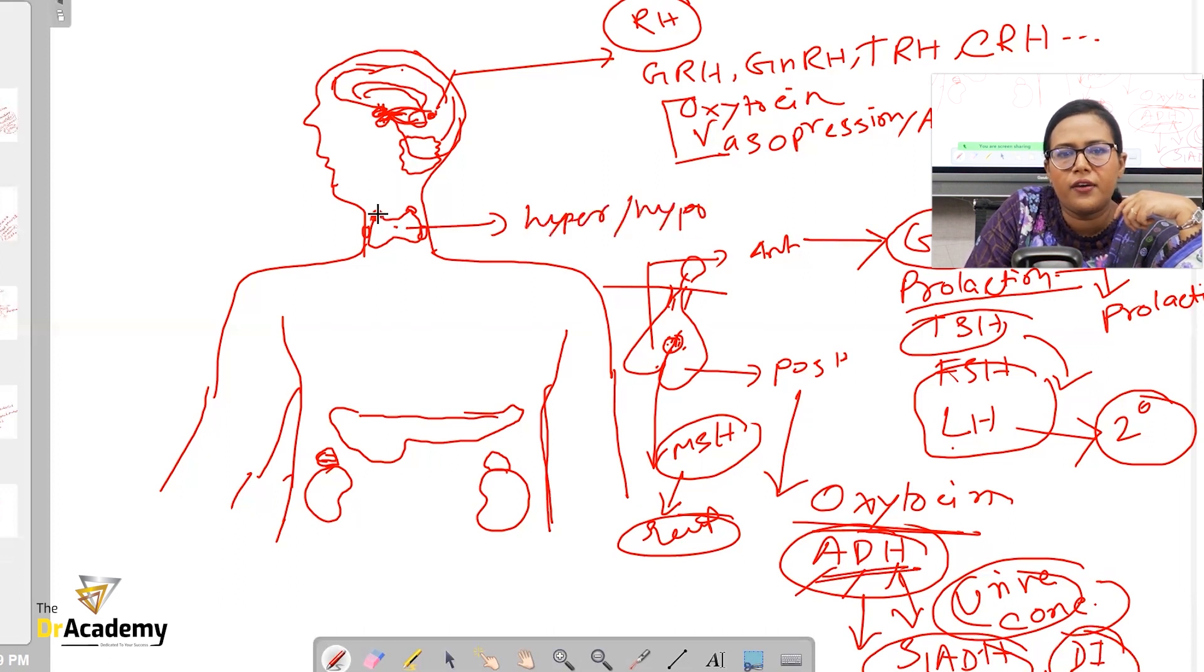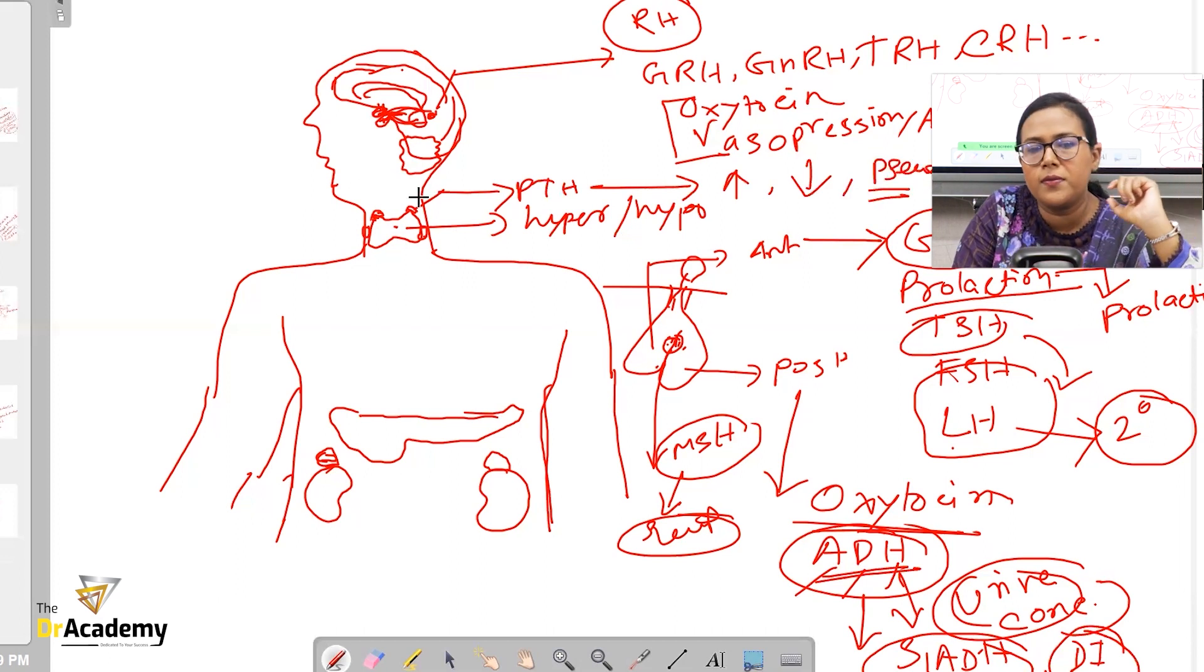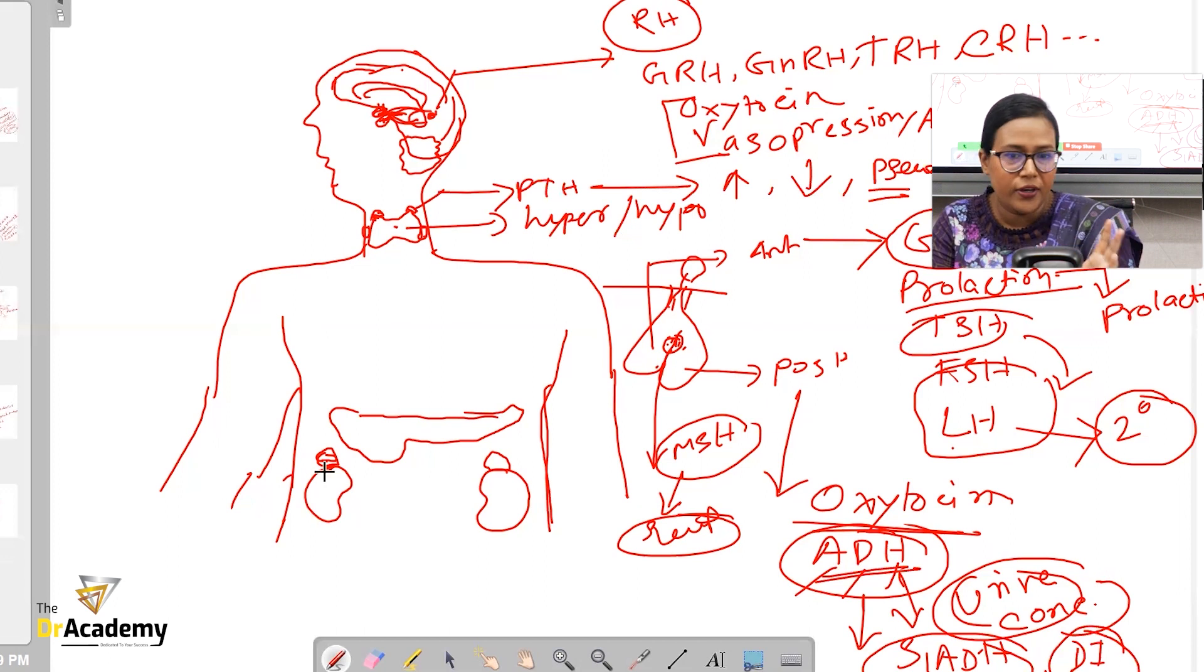There are four parathyroid glands - two on each side of the thyroid gland. The parathyroid gland can have either hyperparathyroidism, hypoparathyroidism, or pseudo-hyperparathyroidism. These are the problems that can happen with parathyroid abnormality.